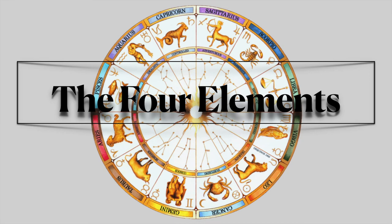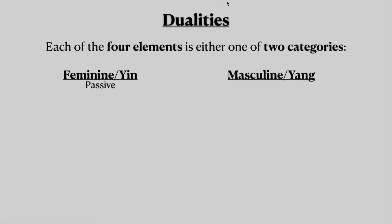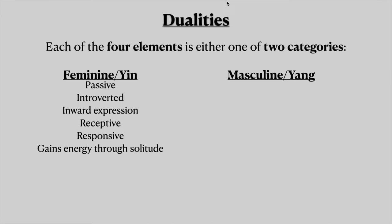So to begin, we will start with the dualities of the elements. There are two of them and each of the four elements is either one of the two categories — it's either feminine yin or masculine yang. Feminine energy is passive, introverted, an inward expression, receptive, responsive, and it gains energy through solitude.